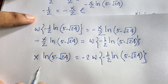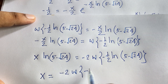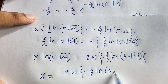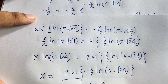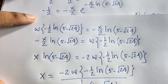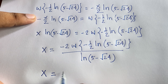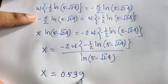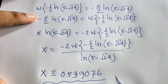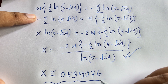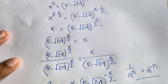Dividing both sides by ln(5 minus square root 24), we find x equals minus 2 times W of minus 1 over 2 times ln(5 minus square root 24), all divided by ln(5 minus square root 24). Using a calculator, the final answer is x equals approximately 0.539076. This is the value of x in this math question. Thank you all — if you enjoyed this video please subscribe to the channel for more interesting videos. Goodbye, take care.